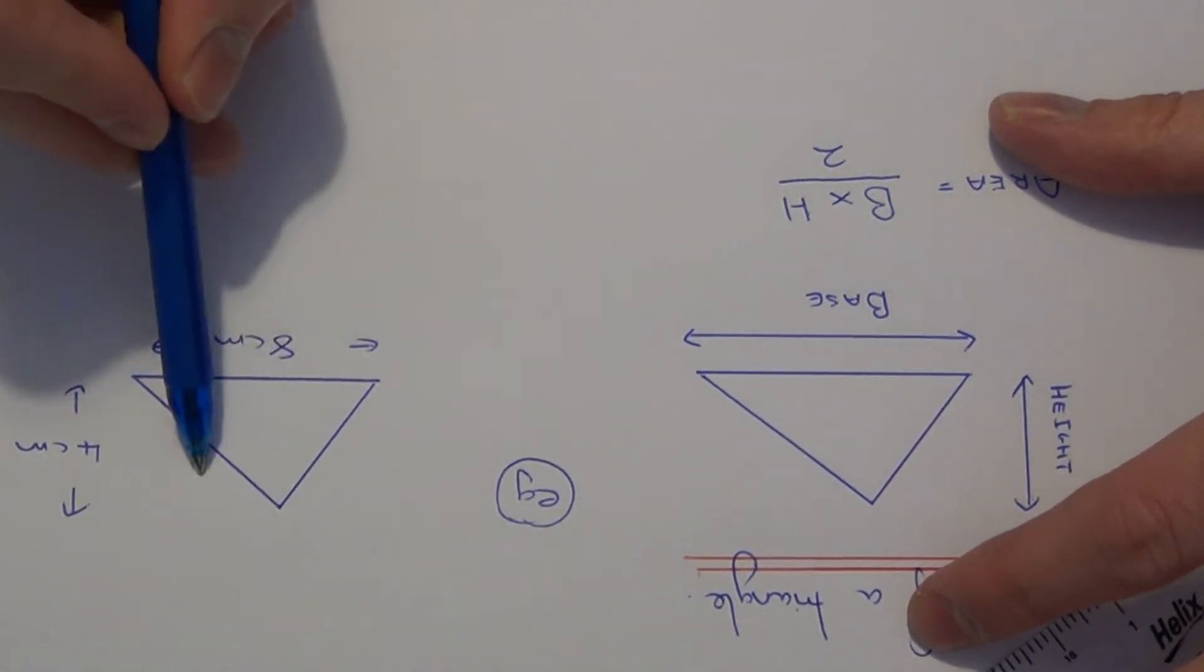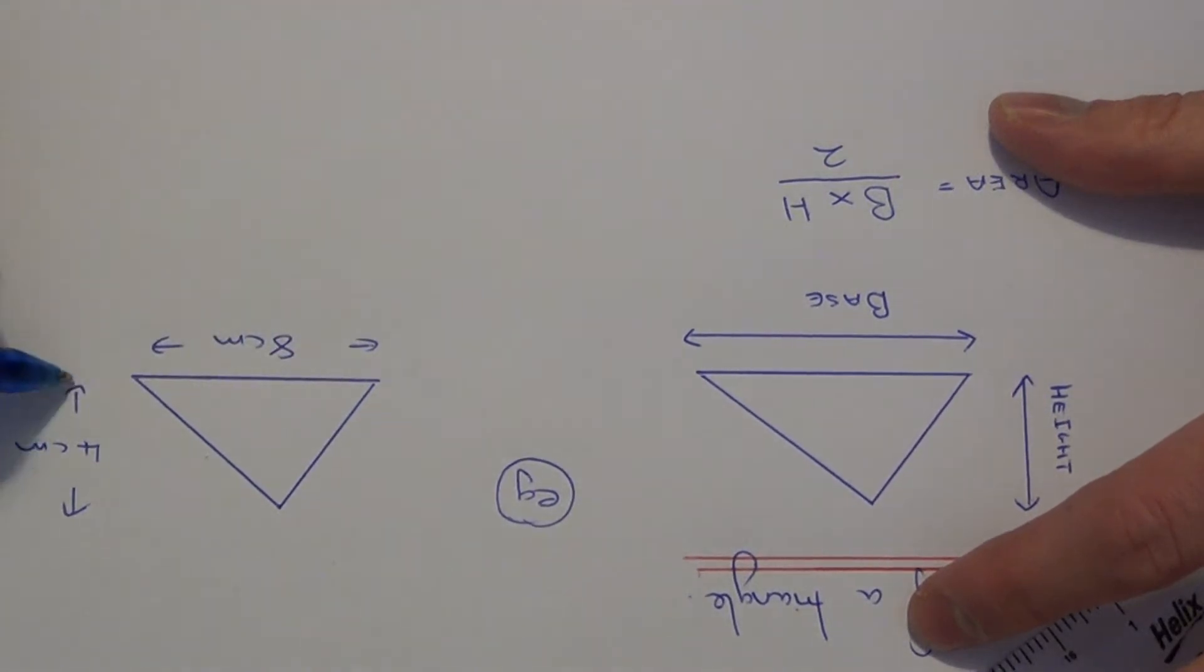If you're given any sloping heights, you won't need to use them in the question because it's always the perpendicular height to the base that you need.